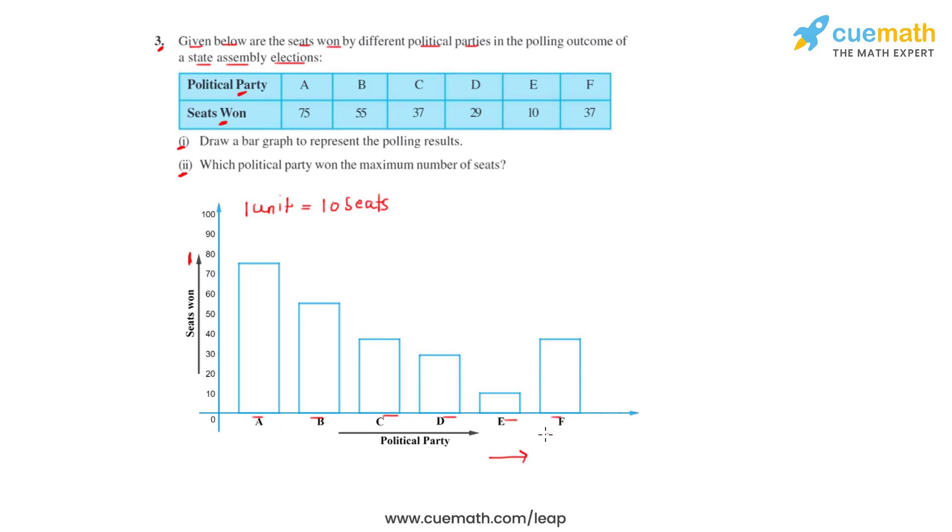As seen in the bar graph, we can easily say that party A has won the maximum number of seats.